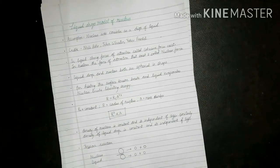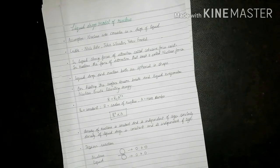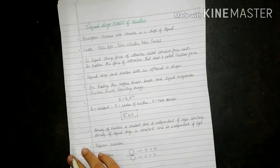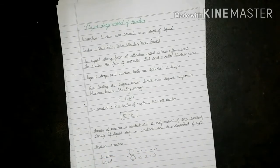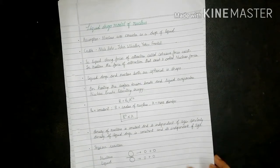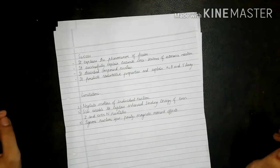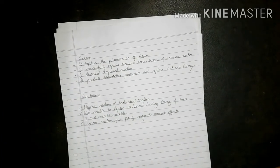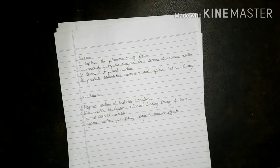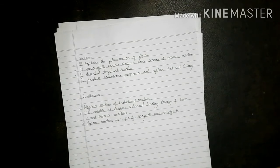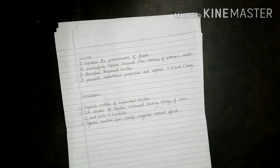This theory aims at explaining the various properties of the nucleus. In terms of successes: it explains the phenomenon of fission, it successfully explained accurate cross sections of resonance reactions, it described the compound nucleus, it predicted radioactive properties, and explains alpha, beta, and gamma decay.